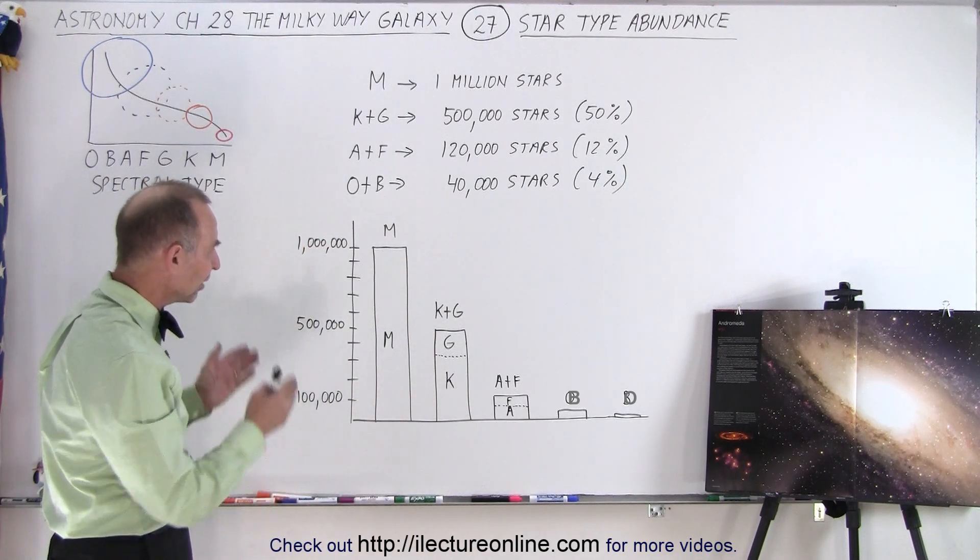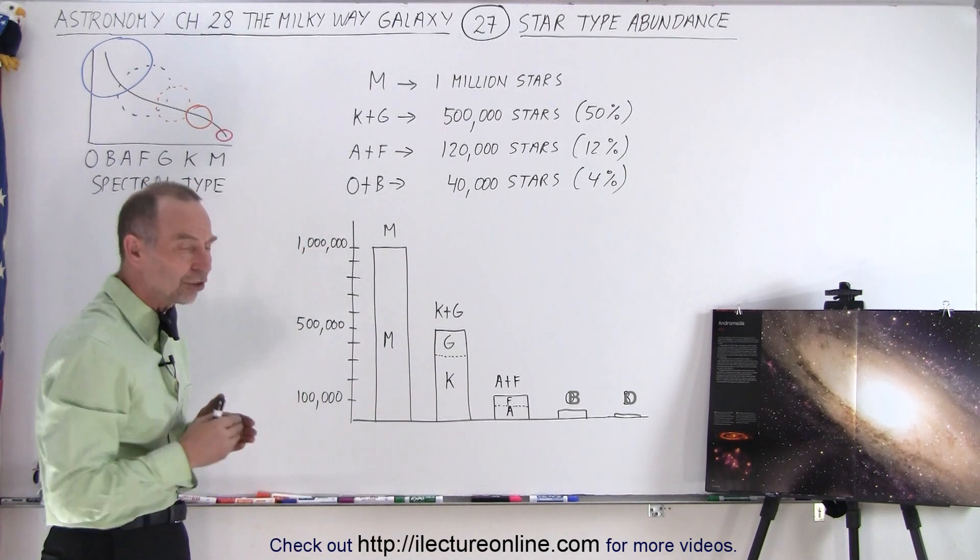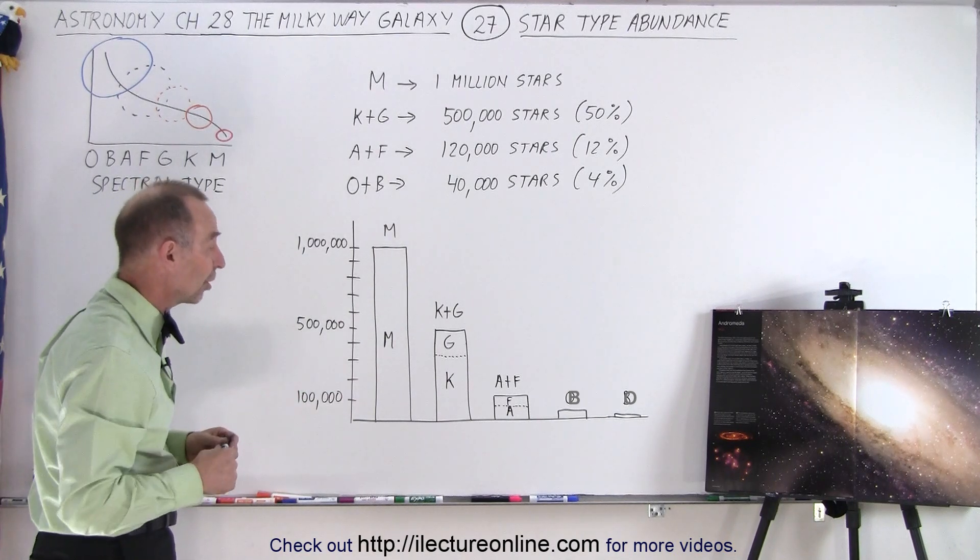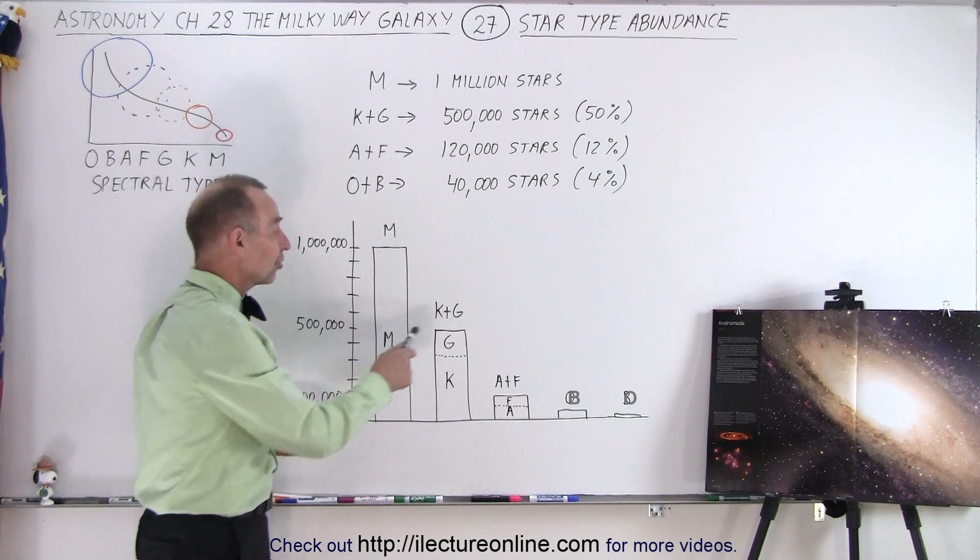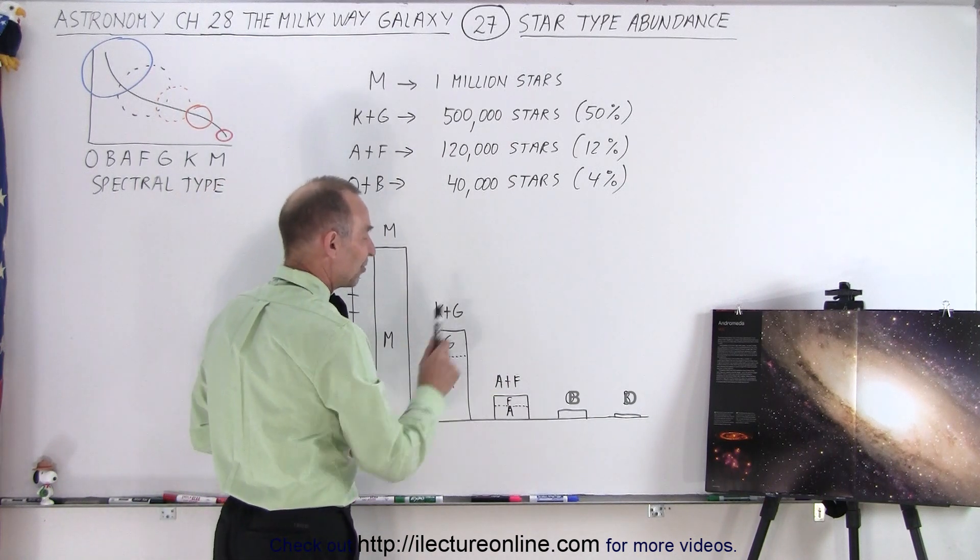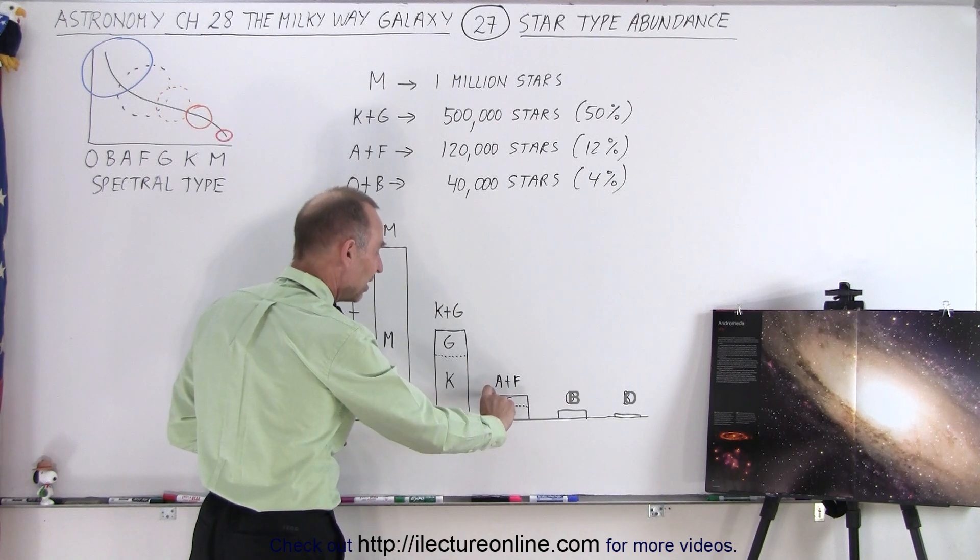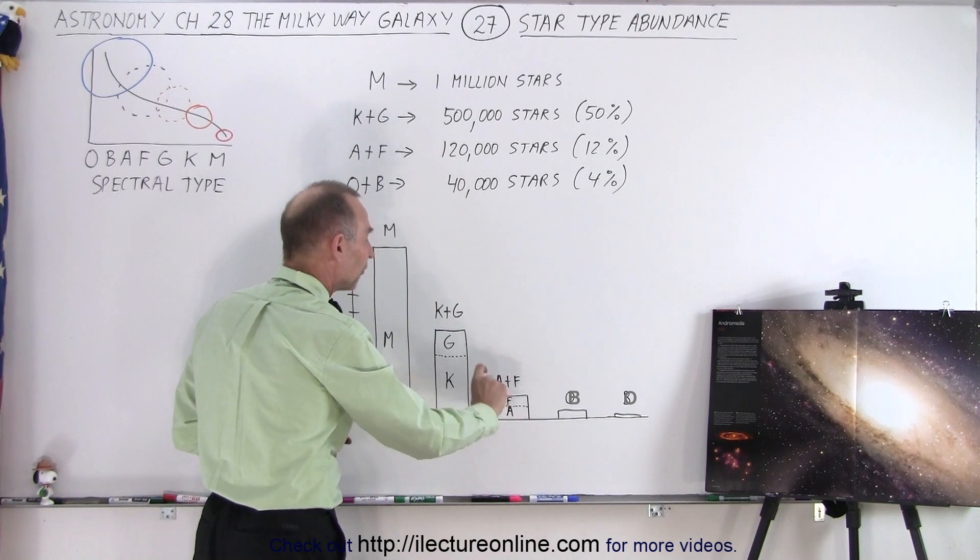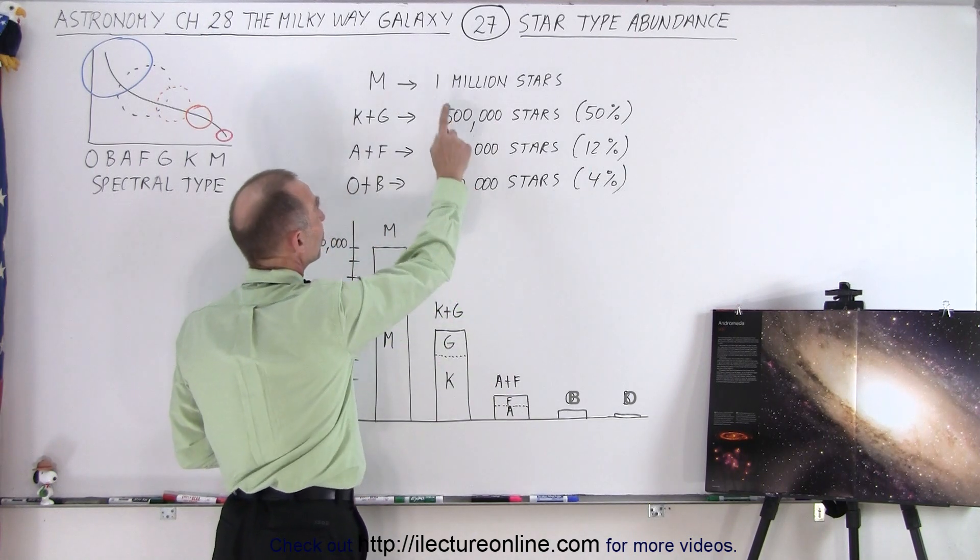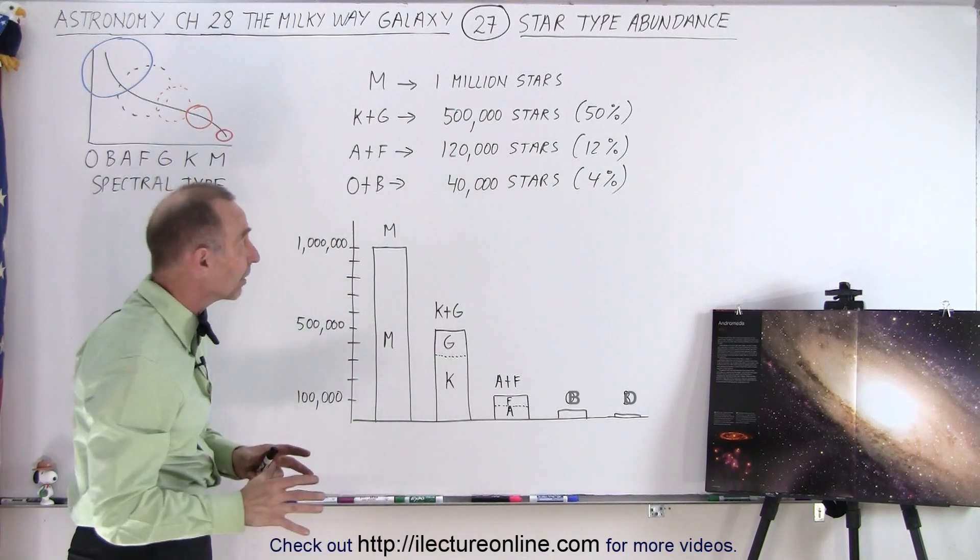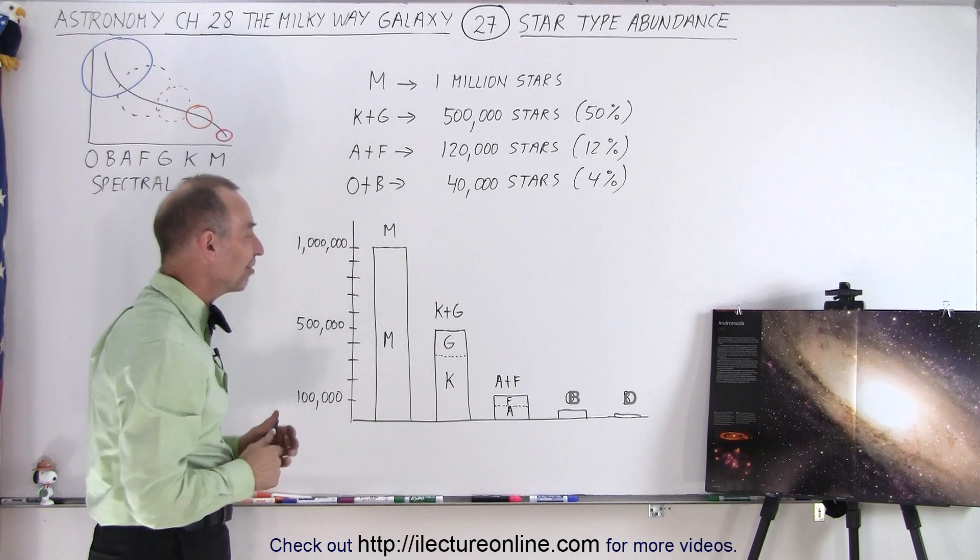And if you just consider the M, the G, and the K-type stars combined, that by far outweighs the number of the other types of stars. Now, larger than the Sun are the A- and the F-type stars. There's more A-type stars than F-type stars, but you can see that relatively speaking, there's far fewer of those. Turns out if there's a million M-type stars, there's only 120,000 or 12% of that of the A- and F-type stars.